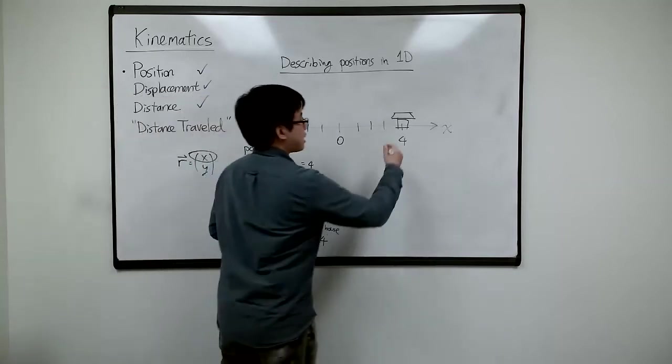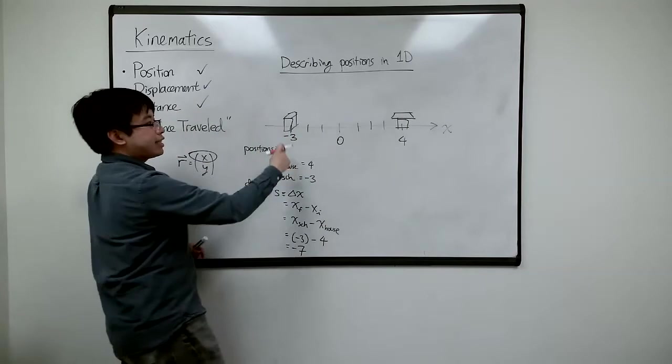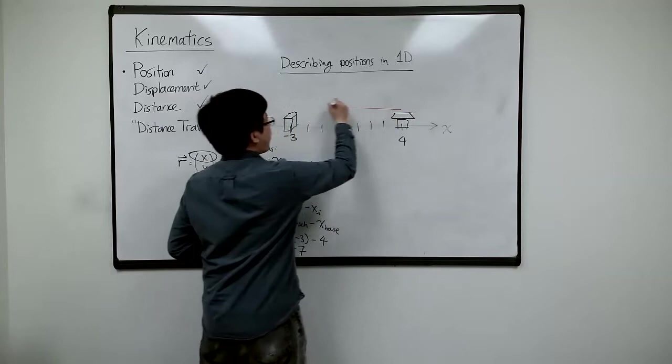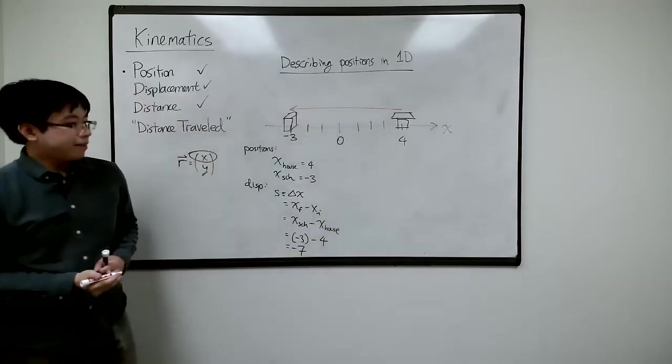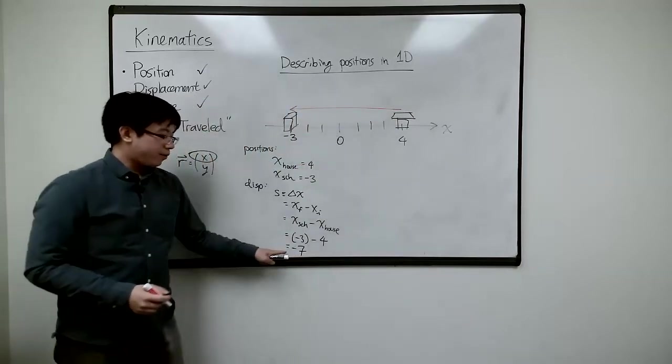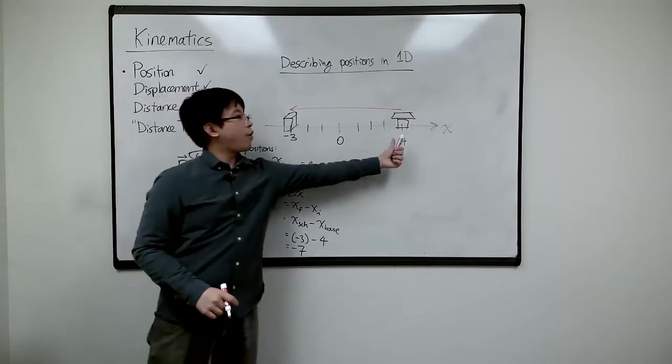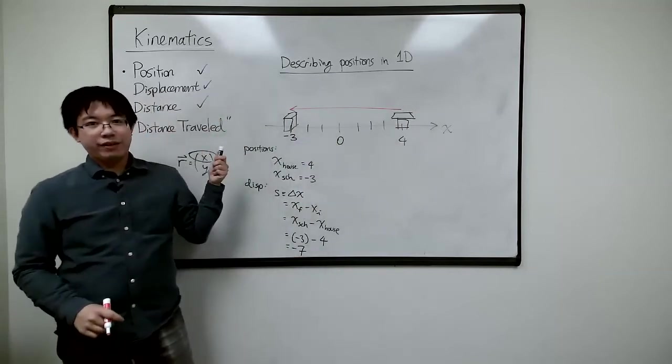Well, let's see. So the displacement is final minus initial. So I'm going from initial here to here, right? So I'm moving this way, right? So does that make sense? So the displacement is minus seven. So I'm going minus seven units over here.